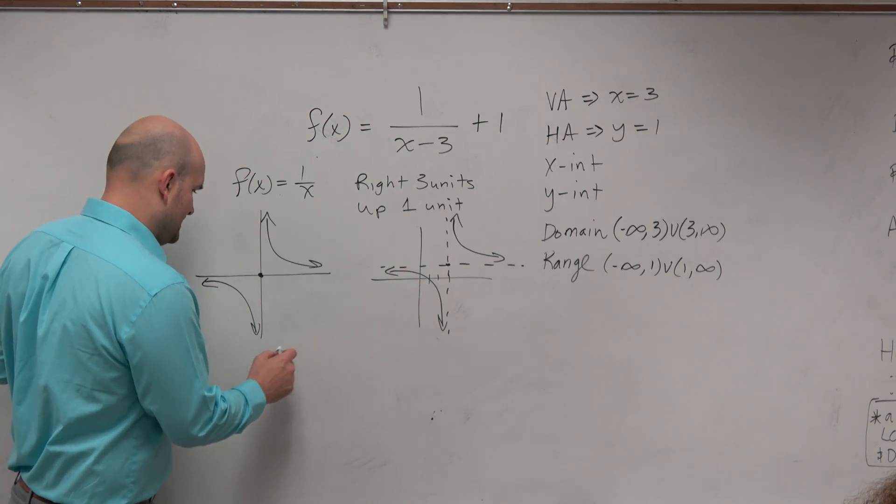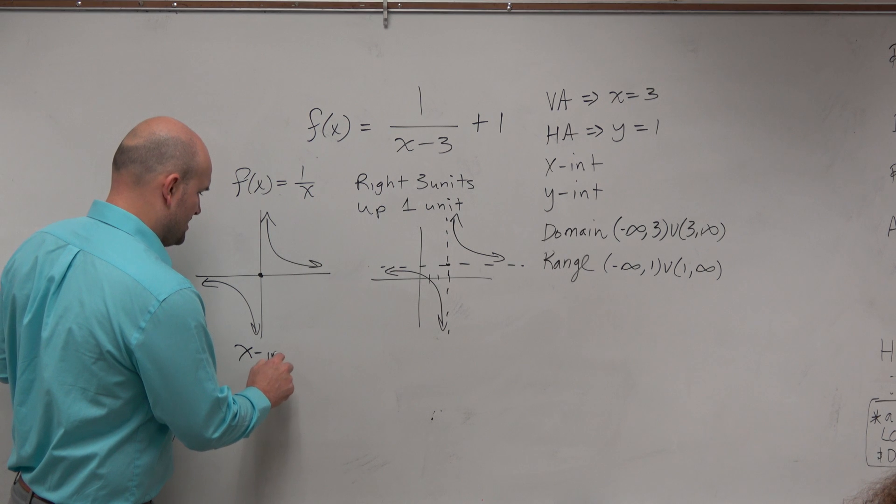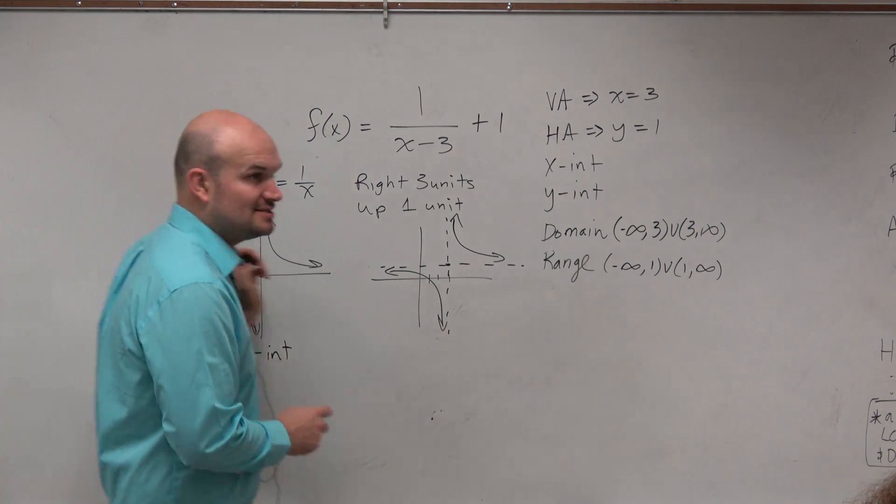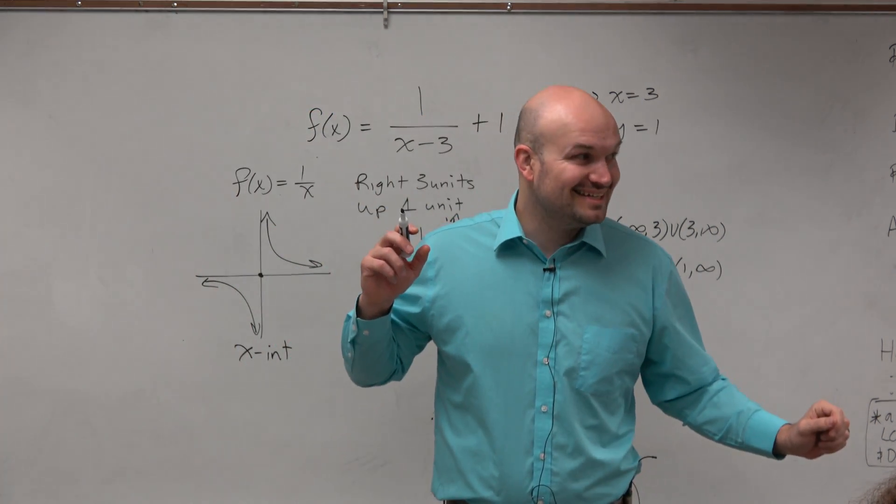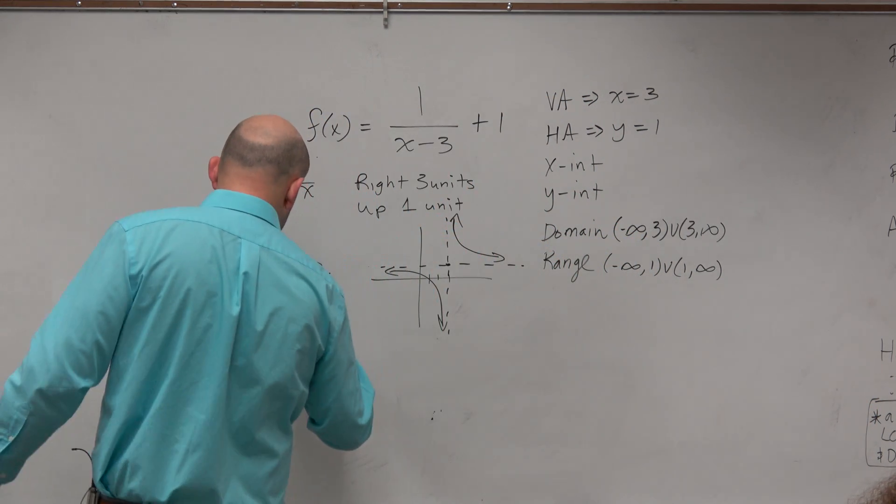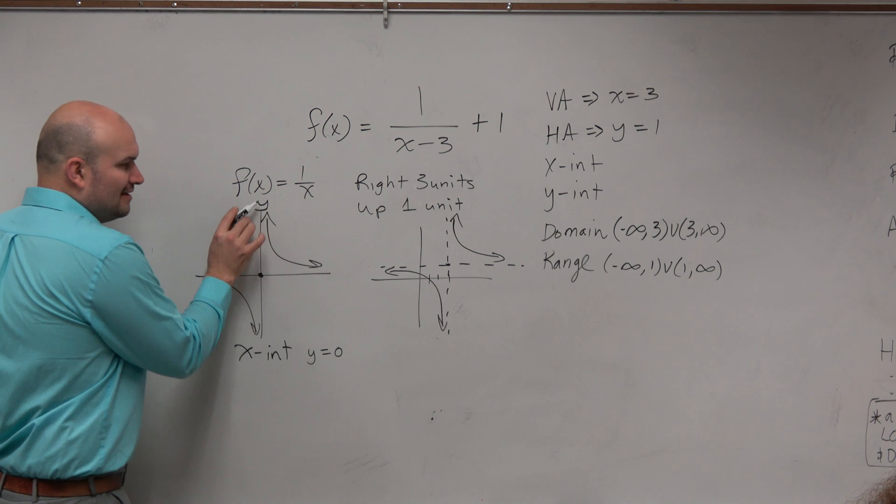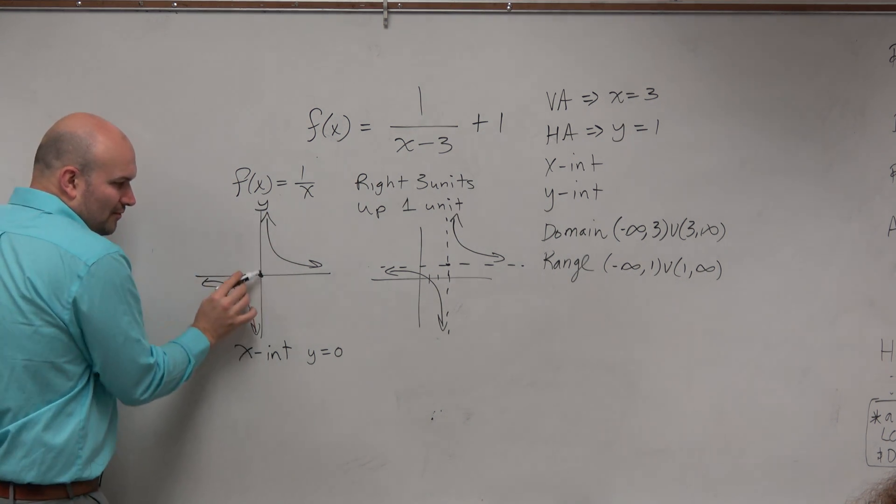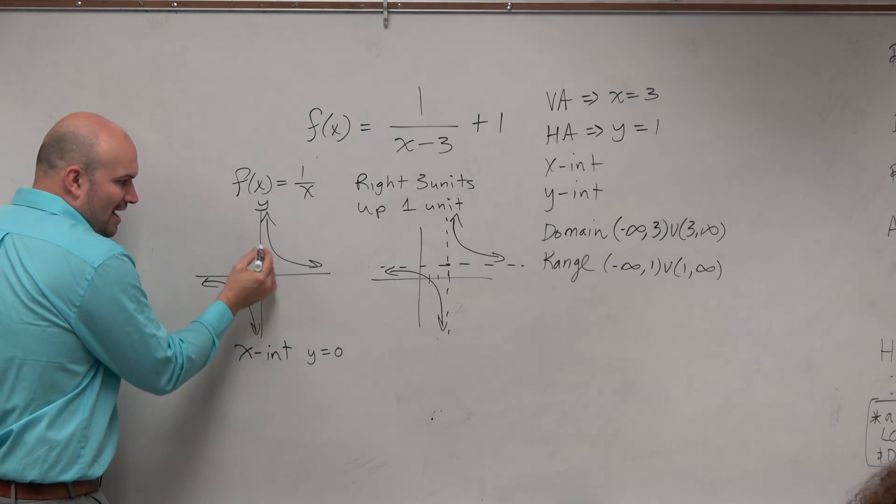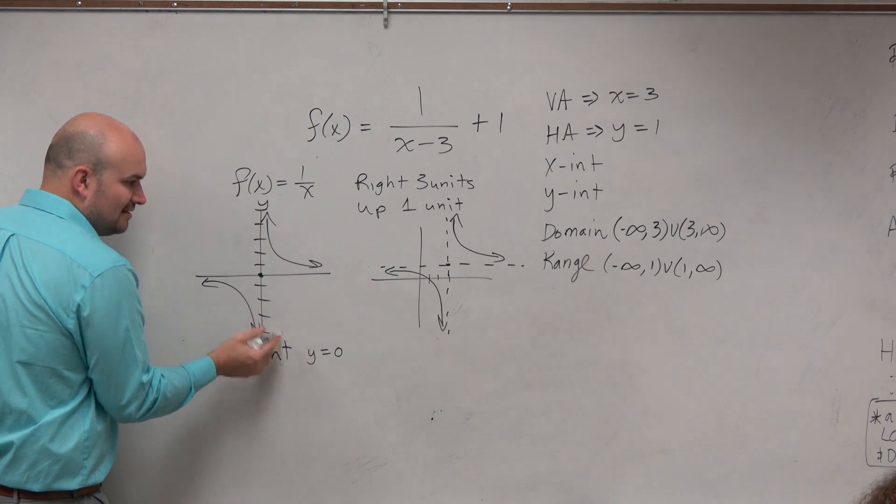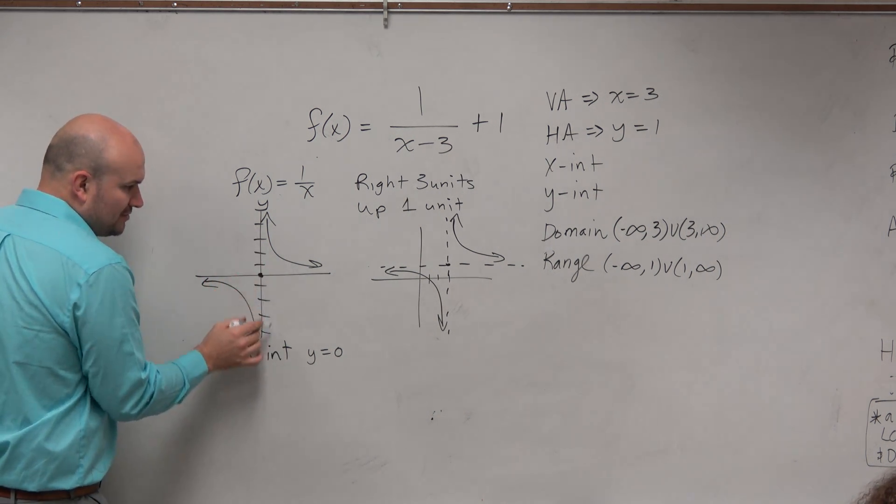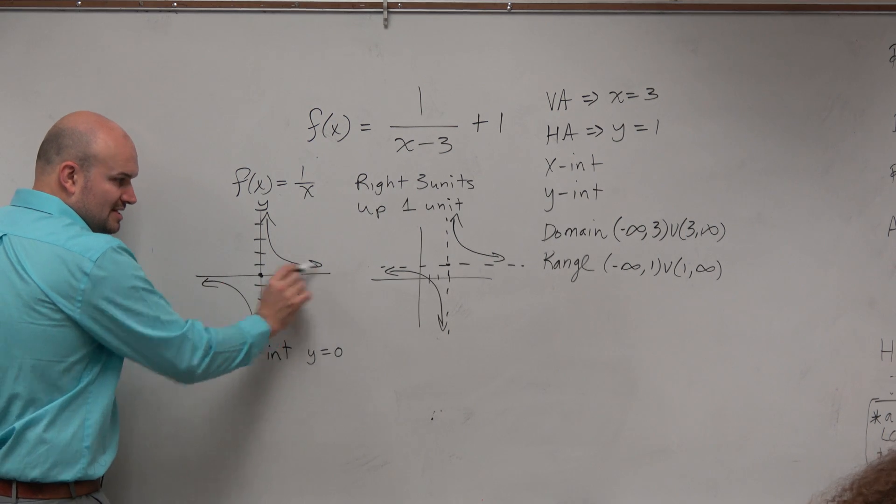So does anybody remember when the x-intercept occurs? We did talk about this. X-intercept occurs when y equals 0, always. It doesn't matter what function you're talking about. Why is that the case? Because here's the y-axis. We're looking for when it crosses the x-axis. That means the y value, like think of this as a number line, 1, 2, 3, negative 1, 2, 3. We're looking for when y is 0. We're looking for when it's there.